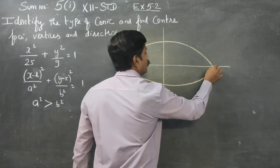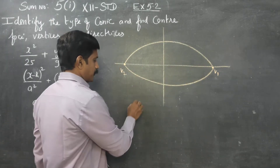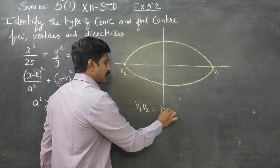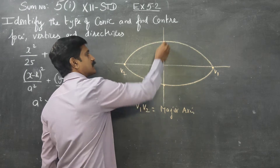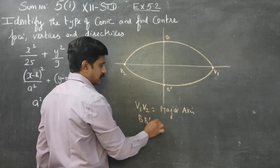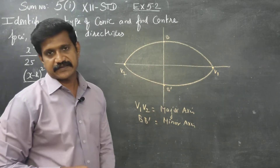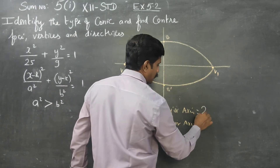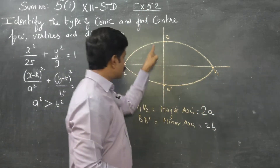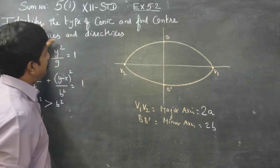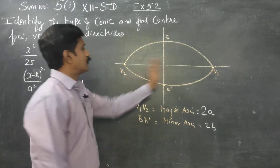In the vertical ellipse, the vertices are V1 and V2. The line from V1 to V2 is called the major axis. The line BB' is called the minor axis. The major axis has length 2a and the minor axis has length 2b.